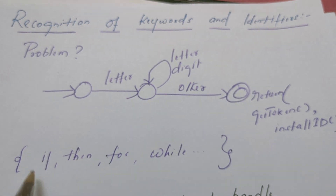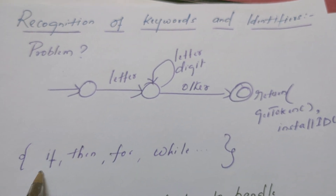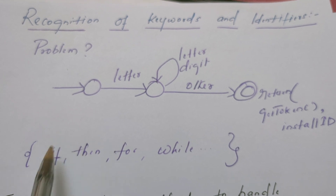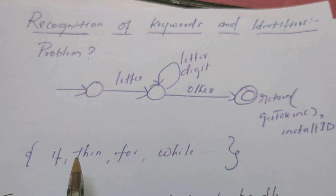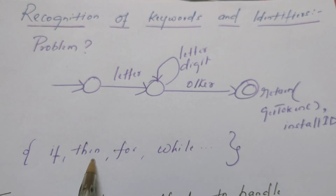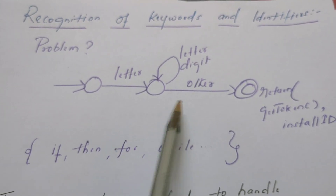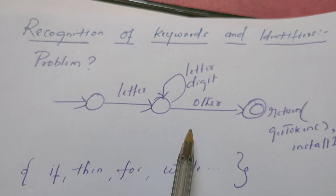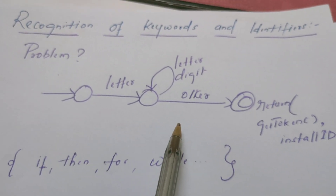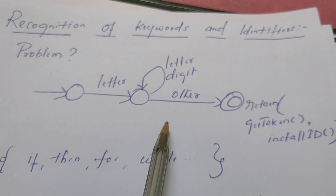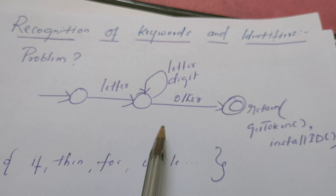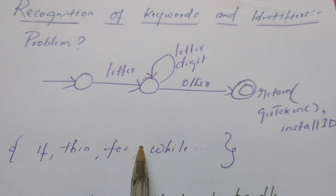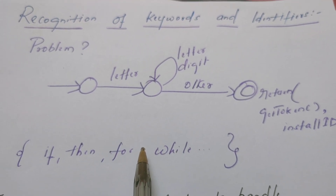Because every keyword consists of a sequence of letters. So, IF, THEN, FOR, WHILE — every keyword can be recognized by the transition diagram of an identifier. And unfortunately, these keywords might be recognized as identifiers.